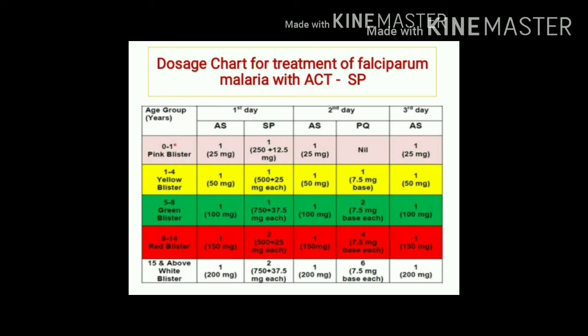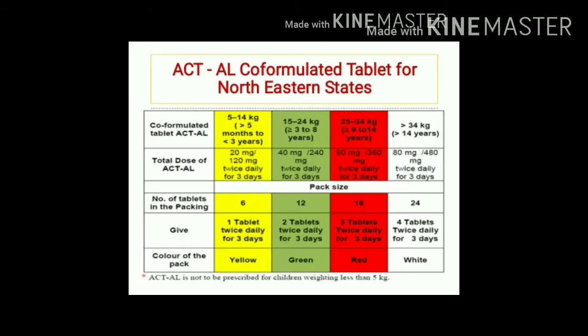Color-coded blister packets are available according to age group for ACTSP: pink for infants, yellow for 1–4 years, green for 5–8 years, red for 9–14 years, and white for 15 years and above. Primaquine is not given to infants as it is contraindicated in that age group.